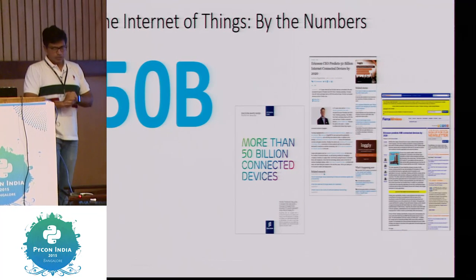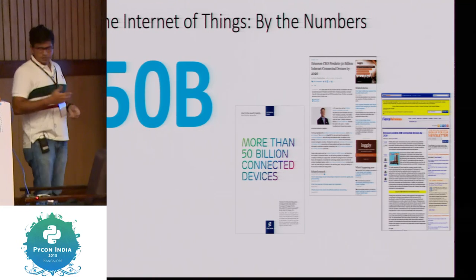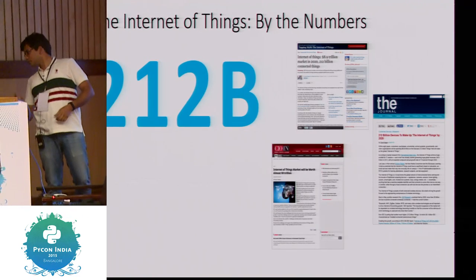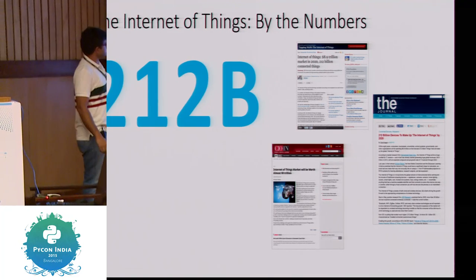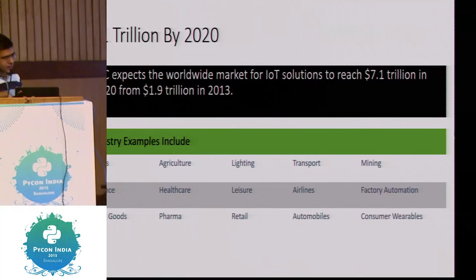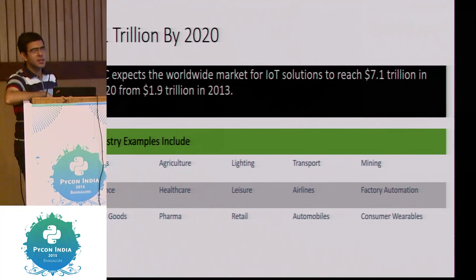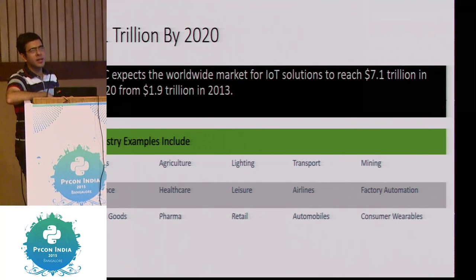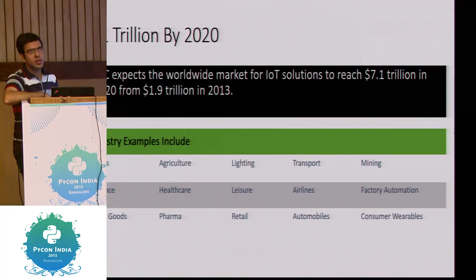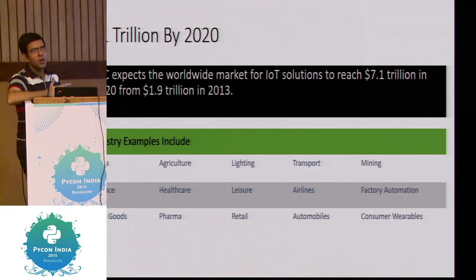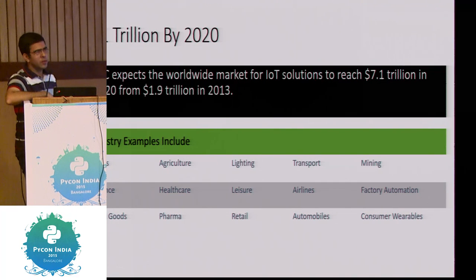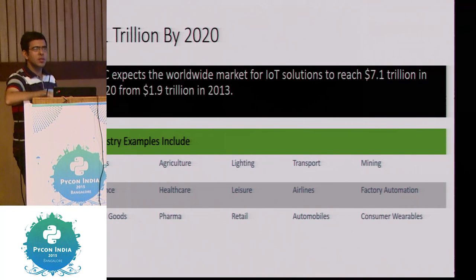Some stats about Internet of Things: 50 billion devices is the number expected by 2020, now revised up to 212 billion. The market is expected to be about 1.9 trillion dollars. These facts show why IoT is a buzz right now. One example is agriculture, where you can remotely monitor and control a farm — turning on a tap based on sensor data from somewhere else entirely.